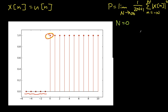Let's do the simplest possible case: suppose cap N is equal to 0. Then P0 is going to be 1 over (2·0 + 1), which is just 1 over 1. When cap N is 0, little n goes from 0 to 0, so I'll just have one term: x(0) magnitude squared. x(0) is 1, so I have 1 divided by 1 times 1, which is just 1.